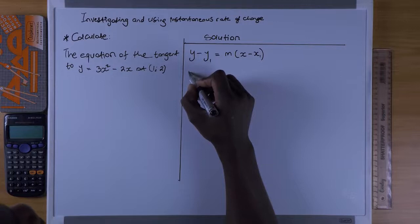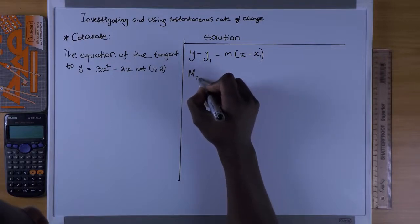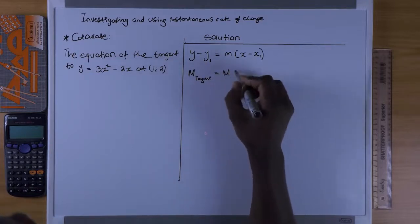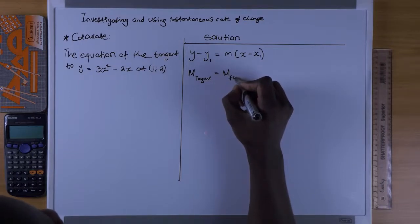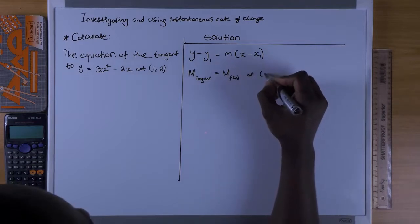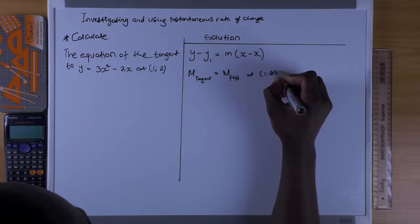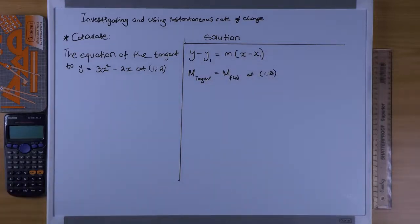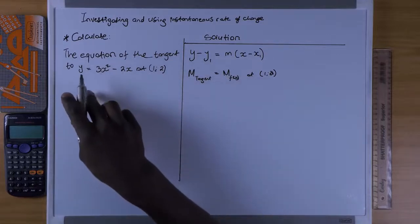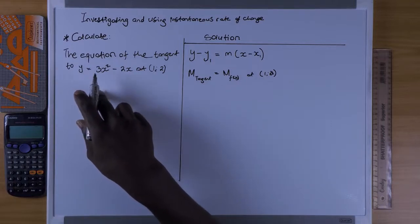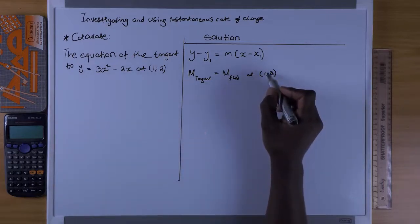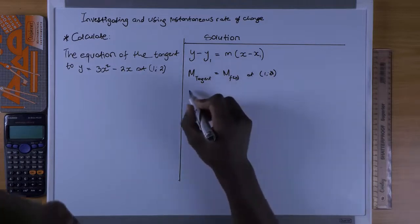The gradient of the tangent m equals the gradient of f(x) at that point. So what we must find now is the gradient of this function, and then substitute it using the coordinates of the given point.